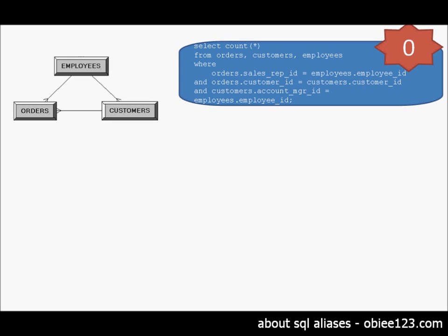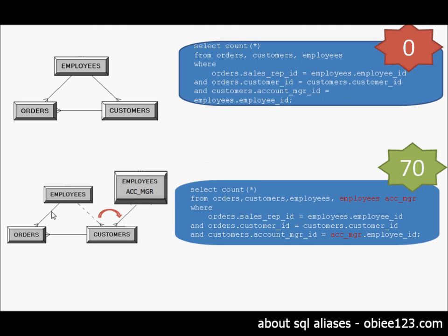In summary, we started out with a query in which we had a circular join and got a result of zero rows. We then introduced a new alias called account manager, moved the join to the new alias, and now we have the correct result of 70 rows — 70 orders that each have an employee as a sales rep and an account manager through the customer. That's the concept of aliases in SQL.